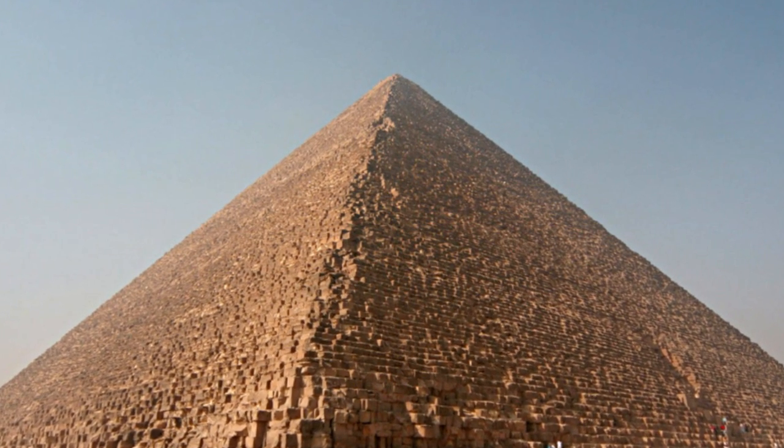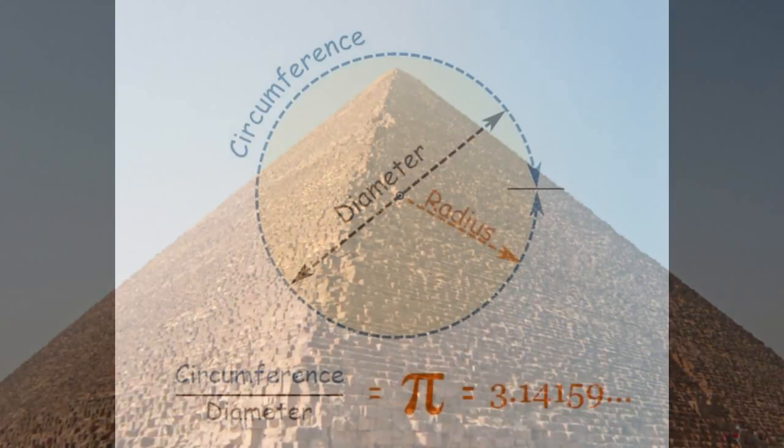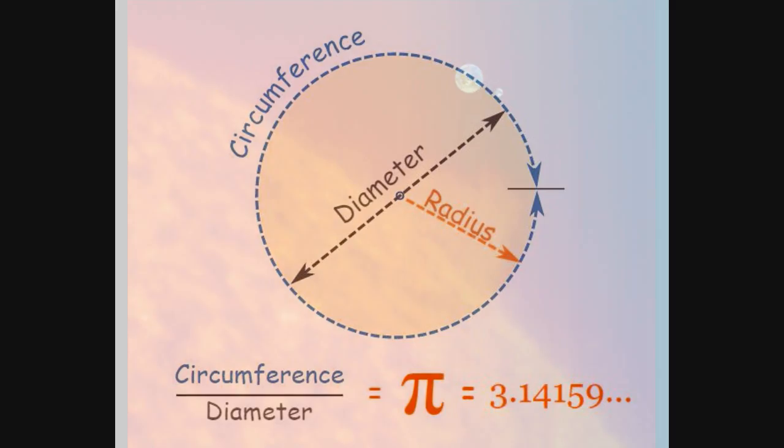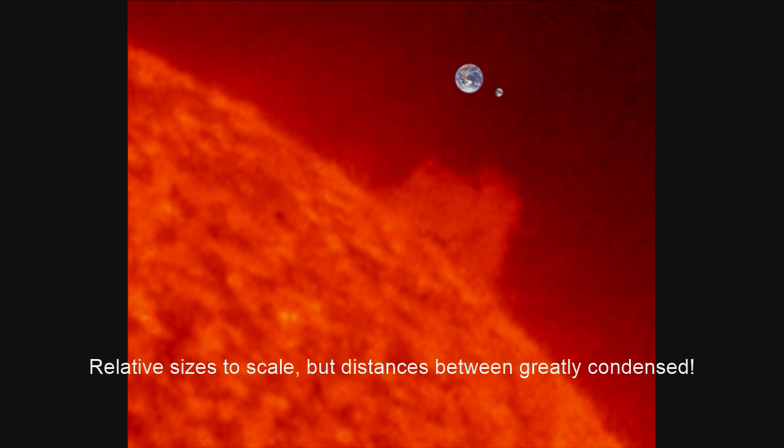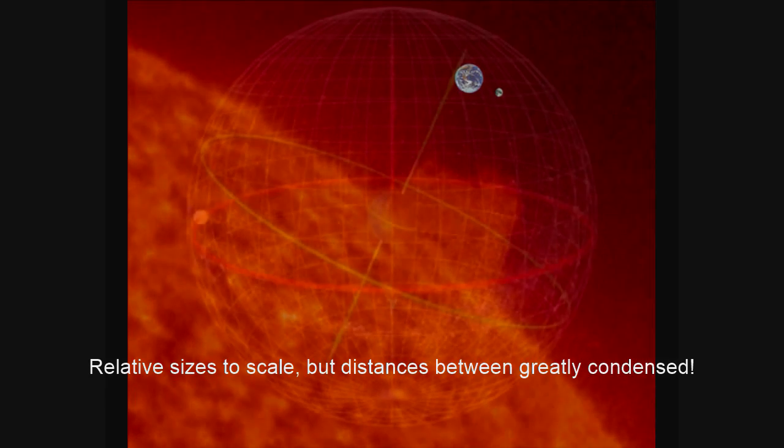For instance, they were not supposed to have known about Pi, or the exact size of the Sun, Earth and Moon, nor were they supposed to know about the precession of the equinoxes.